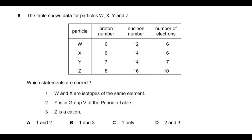Statement 1 says W and X are isotopes of the same element. Isotopes are atoms of the same element with the same number of protons but different numbers of neutrons. W has 6 protons and X has 6 protons — the proton number is the same. From the nucleon number, W has 6 neutrons and X has 8 neutrons. Different neutrons, same protons — so that statement is correct.